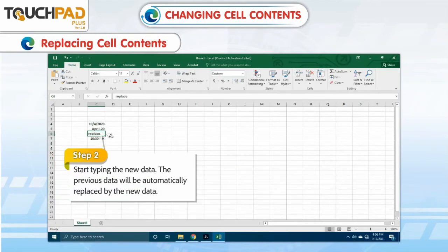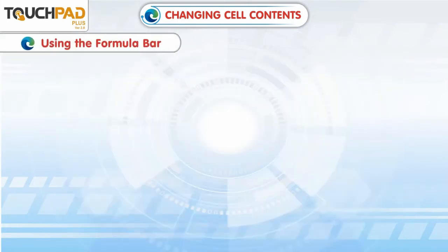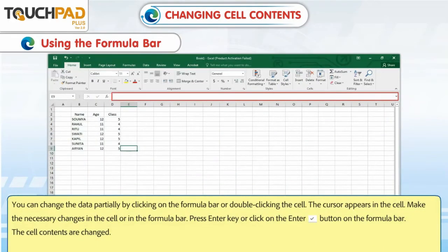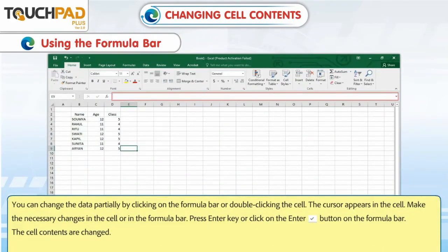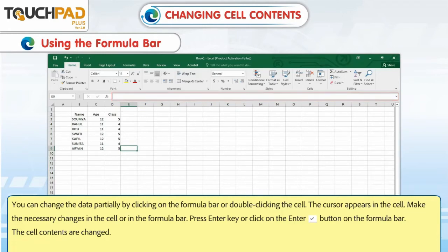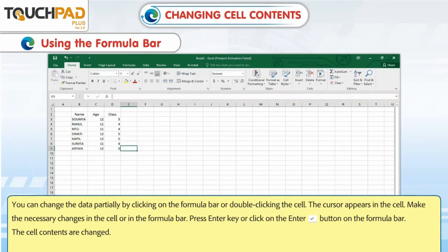The previous data will be automatically replaced by the new data. Using the formula bar, you can change the data partially by clicking on the formula bar or double-clicking the cell. The cursor appears in the cell. Make the necessary changes in the cell or in the formula bar. Press the Enter key or click on the Enter button on the formula bar.